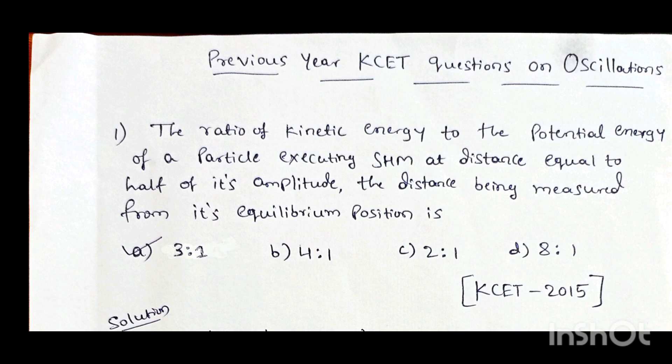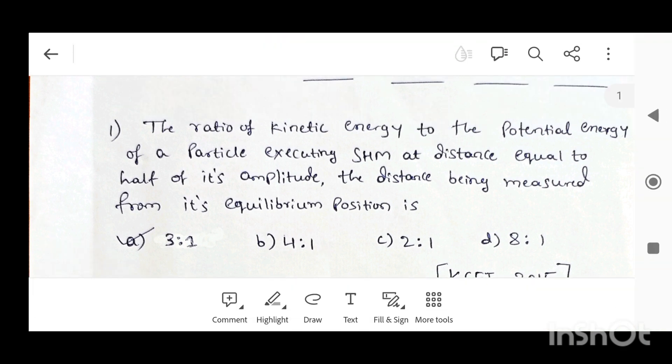First question: the ratio of kinetic energy to the potential energy of a particle executing SHM at a distance equal to half of its amplitude, the distance being measured from its equilibrium position. Options are 3:1, 4:1, 2:1, and 8:1. This question appeared in KCET 2015.